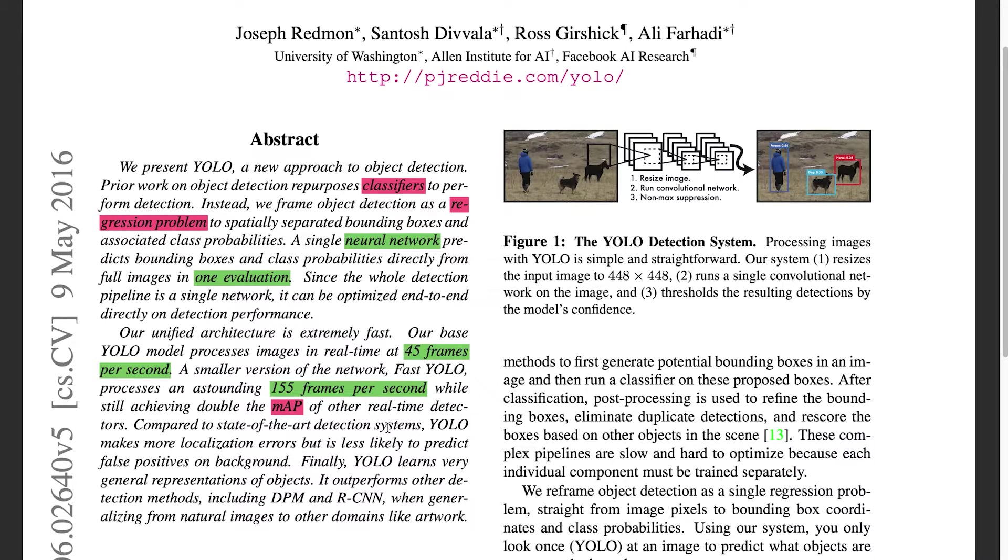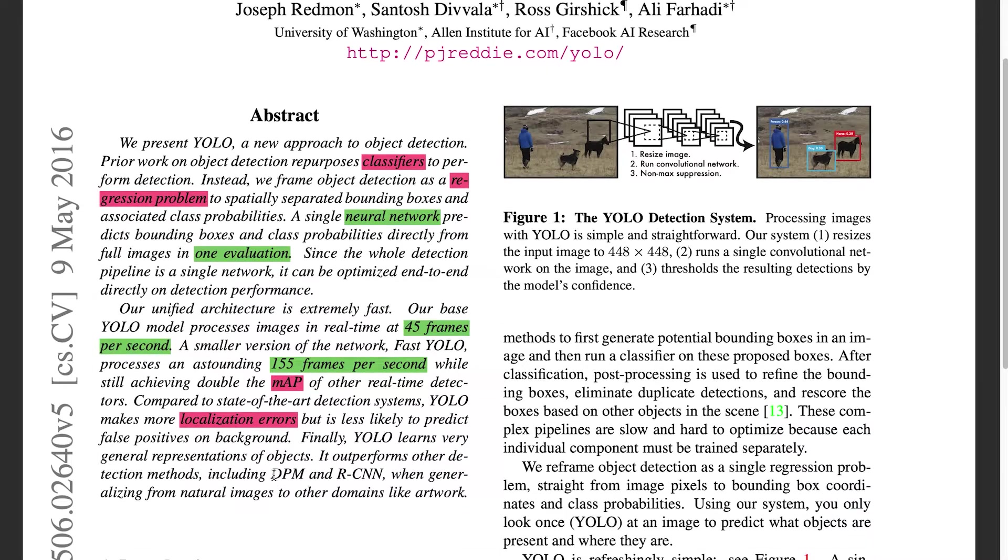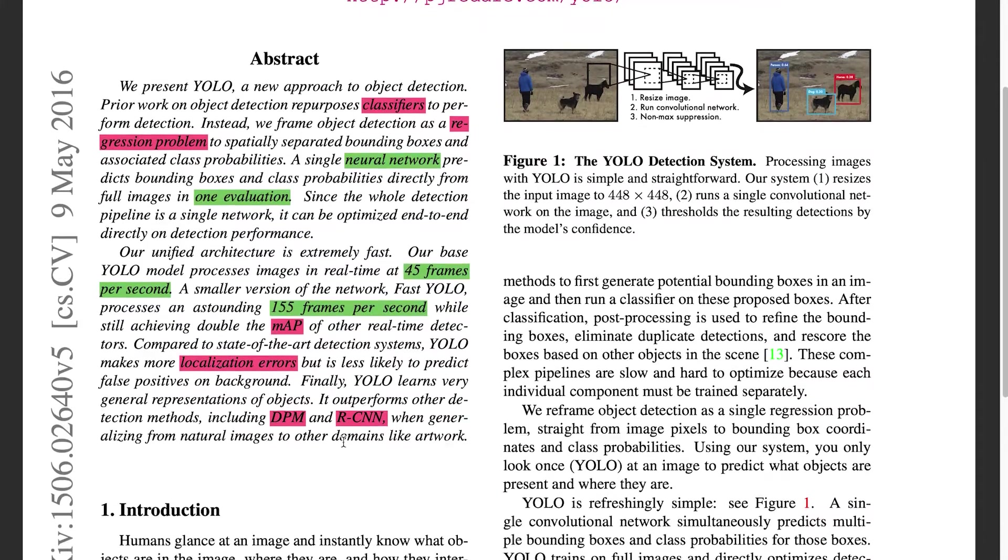Compared to state-of-the-art detection systems, YOLO makes more localization errors, which I don't understand, but is less likely to predict false positives on the background. Finally, YOLO learns from general representatives of objects that outperforms other detection methods, including DPM and RCNN, both of which I'm unfamiliar with, so I'm going to highlight that as well, while generalizing from natural images to other domains like artwork.